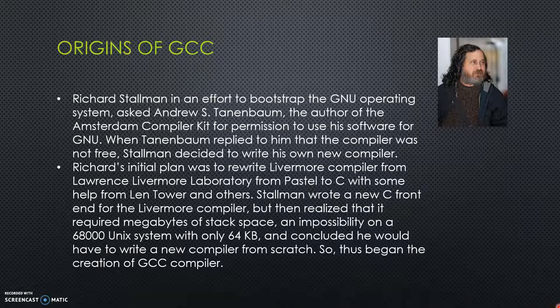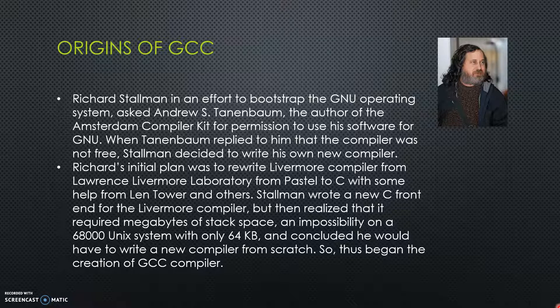The original GCC was developed by Richard Stallman, who was the founder of the GNU project. Stallman founded the GNU project in 1984 to create a complete Unix-like OS, to promote freedom and cooperation among computer users and programmers. Later, when looking for software to bootstrap his operating system, he found there was a need for a compiler that was good as well as free, because the compilers he was looking for were all paid and he did not want to use paid software.